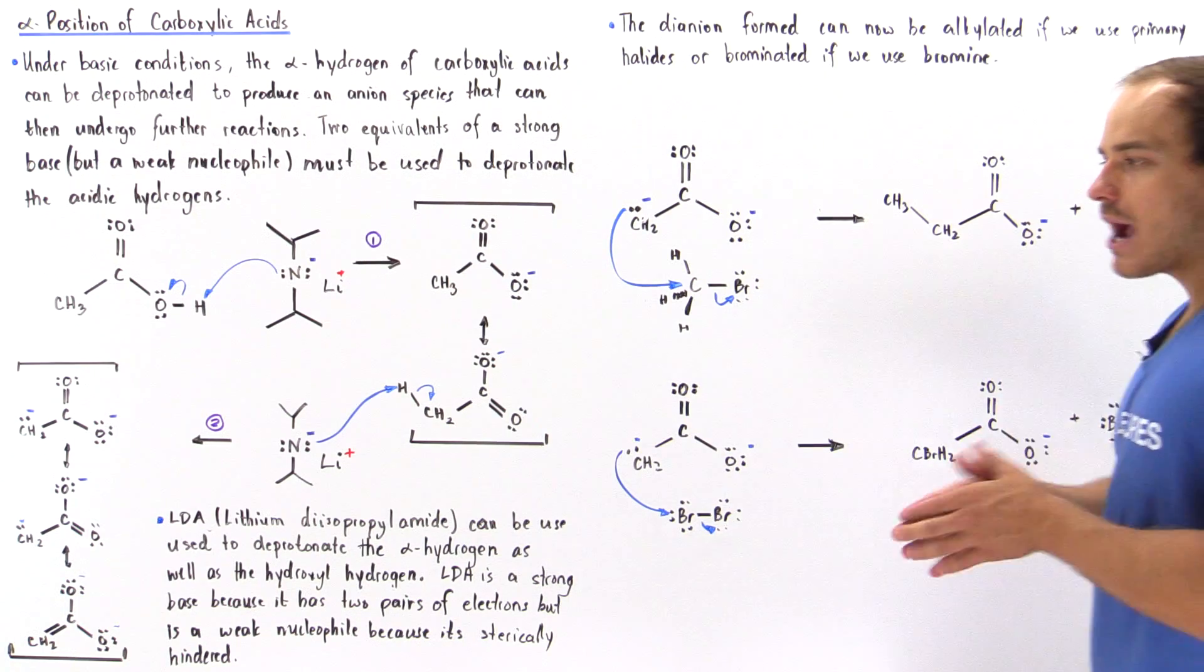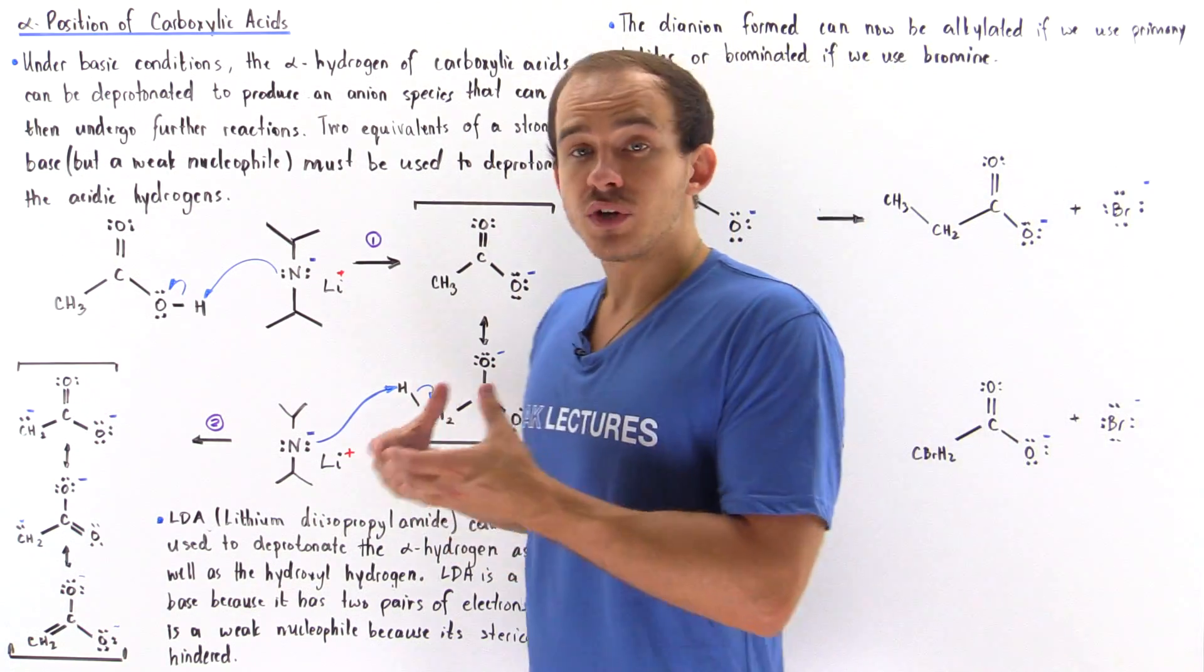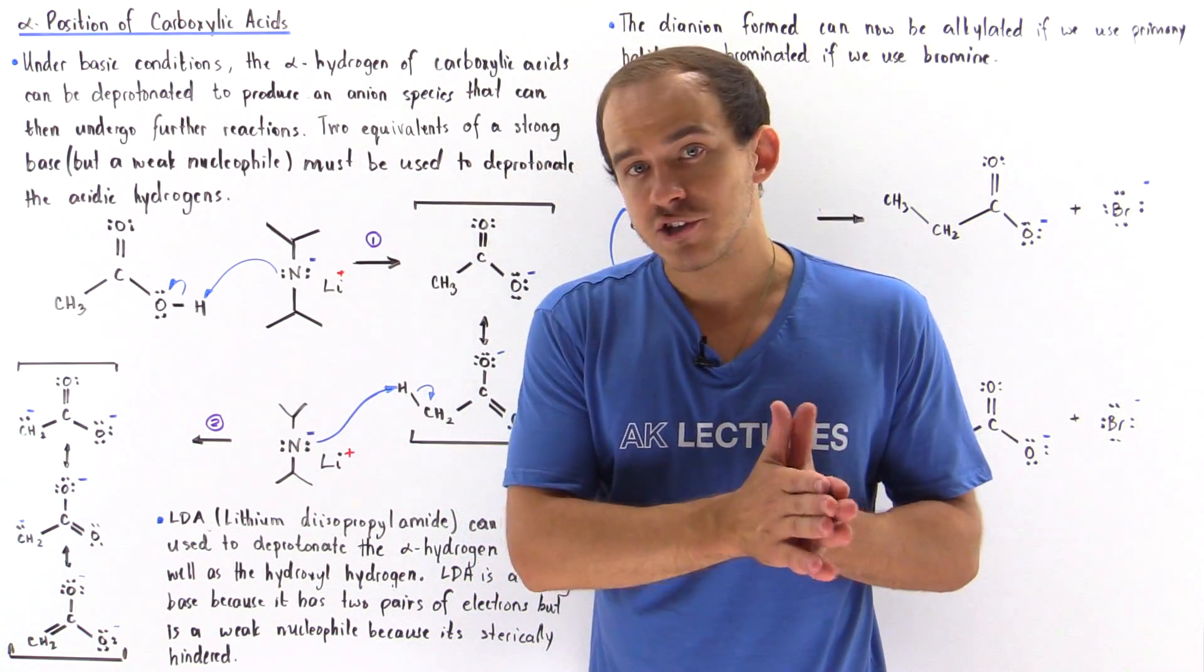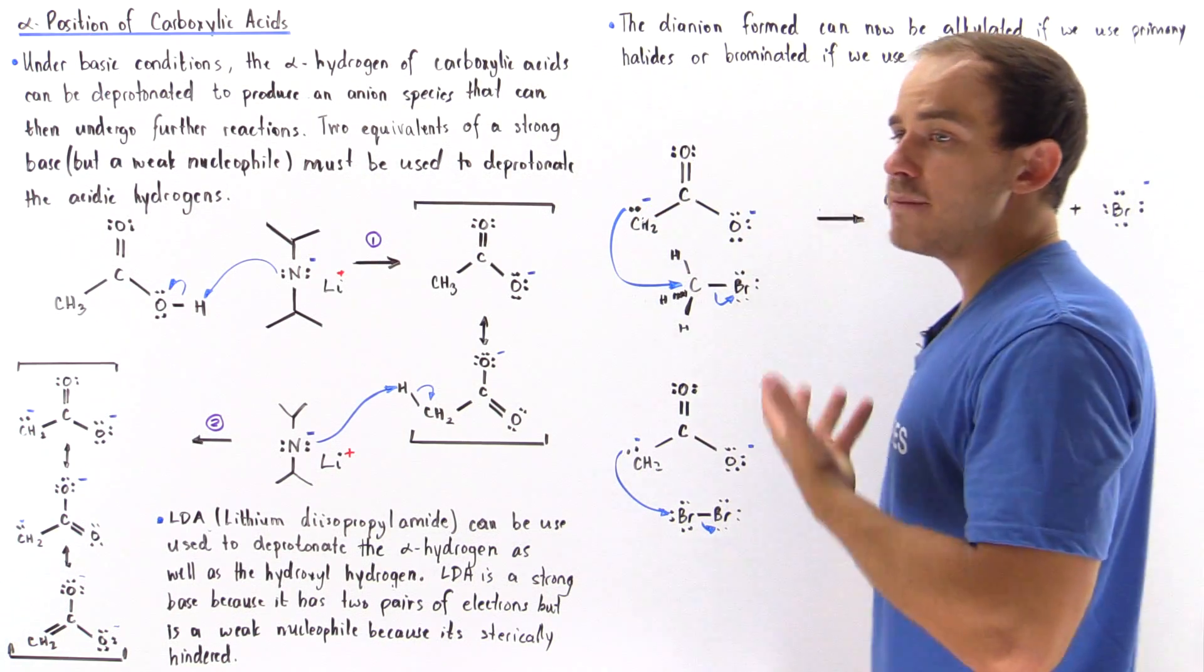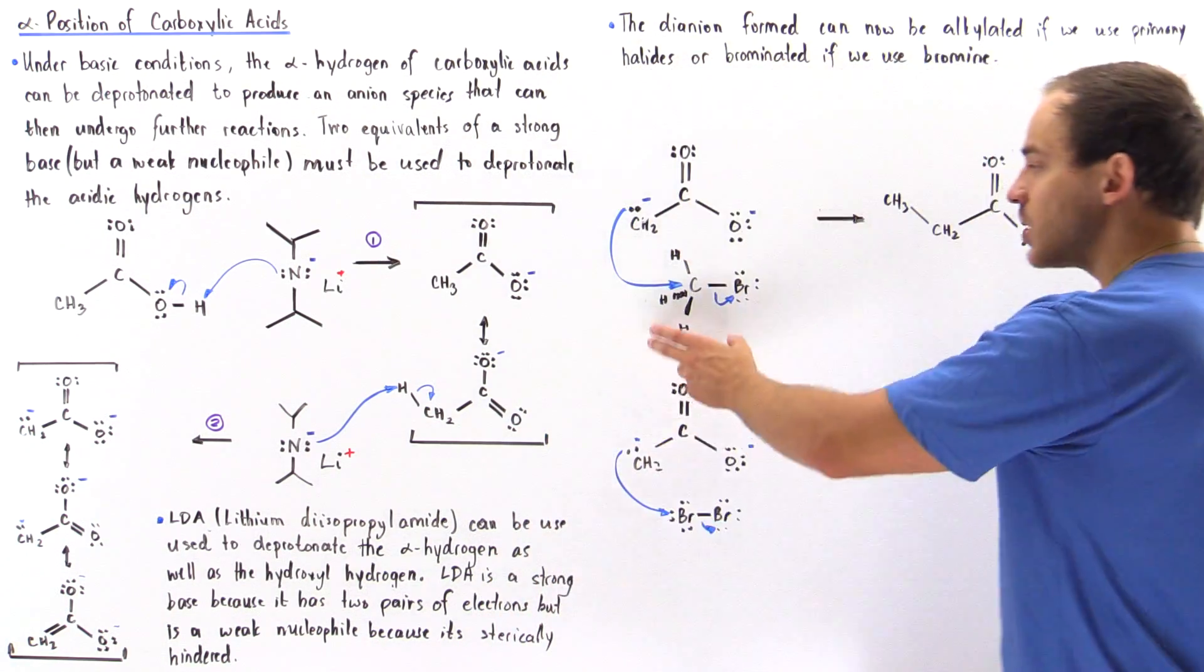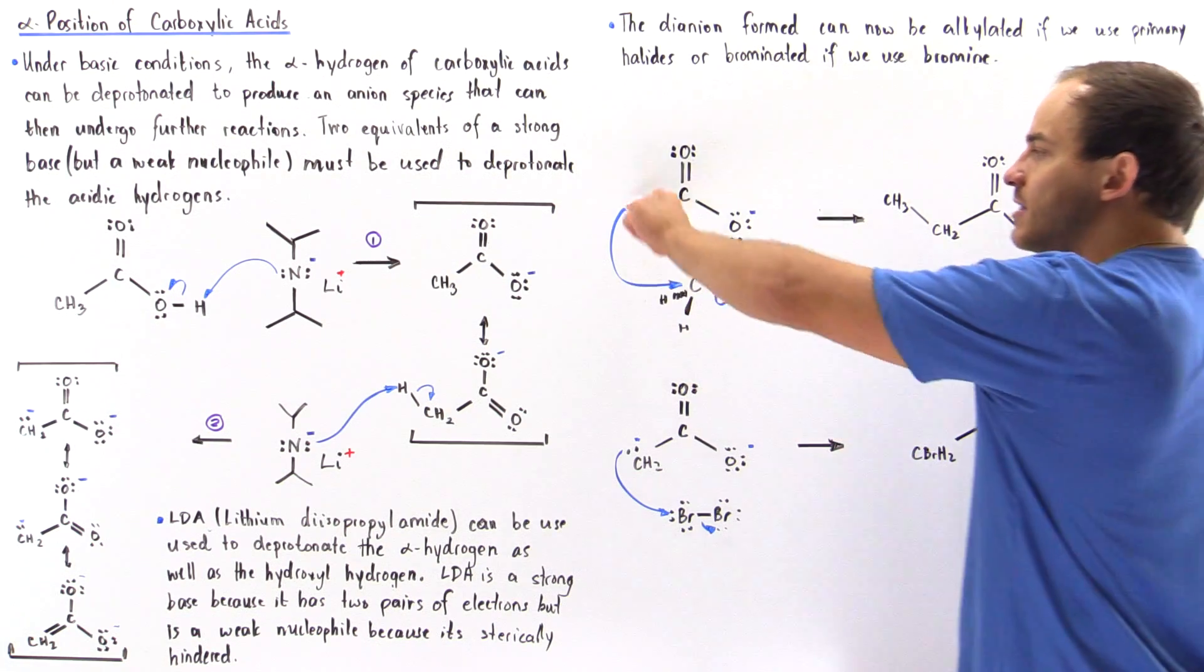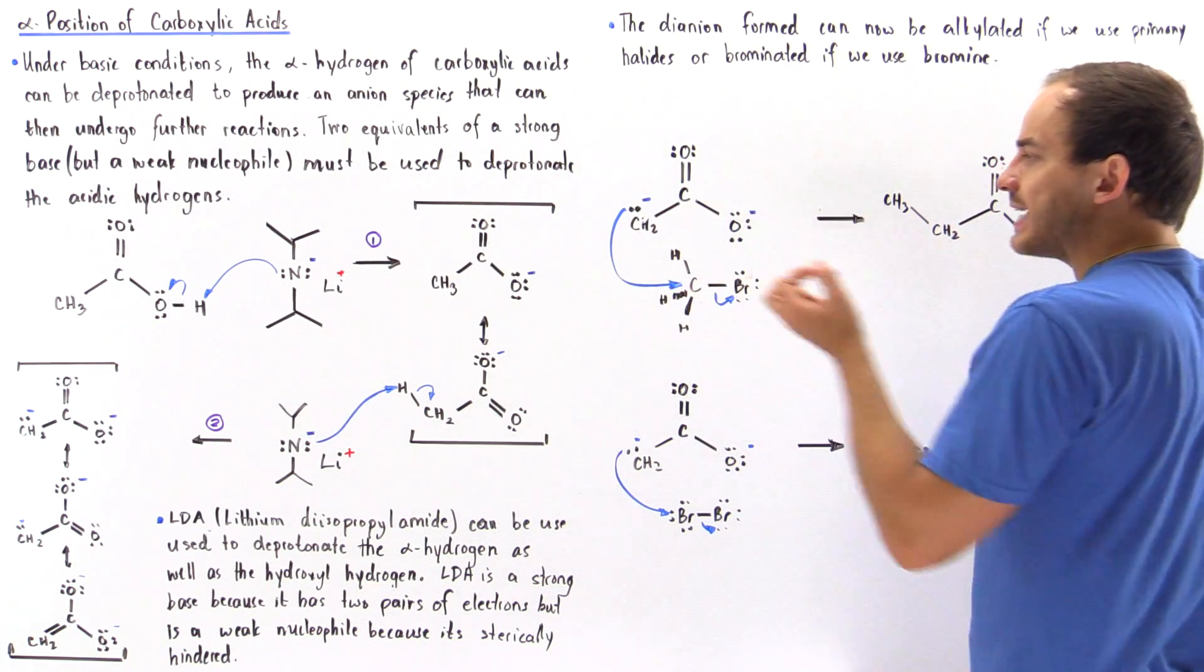So now if we take our di-anion, we can react it in two different fashions. If we take the di-anion and mix it with a primary alkyl halide such as this methyl bromide, then we have a nucleophilic SN2